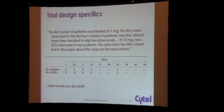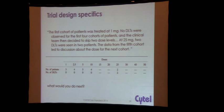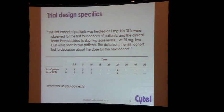In this Novartis trial, they put three patients on dose 1, saw no DLT, then increased to 2.5 mg with four patients and saw no DLT, then no DLTs at 5 mg, no DLTs at 10 mg, and then for some unknown reason decided to skip two doses — going straight to 25 mg — where they saw two DLTs out of two patients.